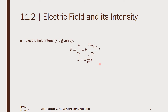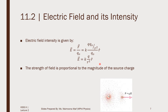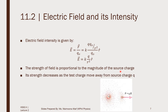From this equation you can see that the strength of the field is proportional to the magnitude of the source charge. The field does not depend on the magnitude of the test charge — it only depends on the magnitude of the source charge. And its strength decreases as the test charge moves away from the source charge, because the electric field intensity is inversely proportional to the square of the distance.